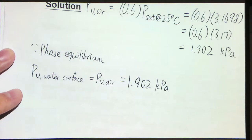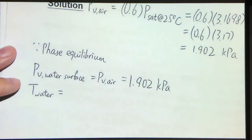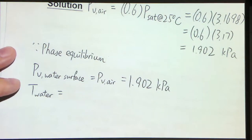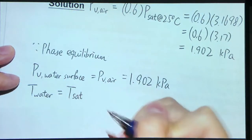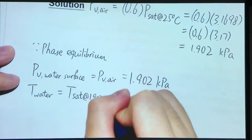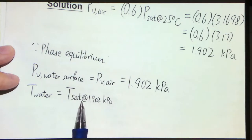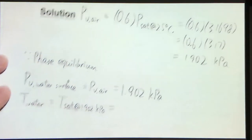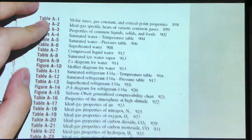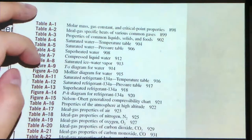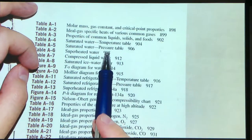How can we find out the temperature of the water? The temperature of the water can be found because it has evaporated, so this temperature should be the saturated temperature at this pressure. We have the pressure and we need to get the saturated temperature. Let's go back to the property table. As I mentioned, the pressure table is Table A5 — if you have a given pressure, go to Table A5.